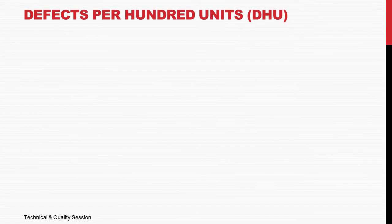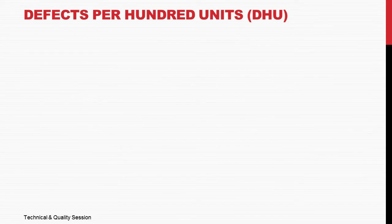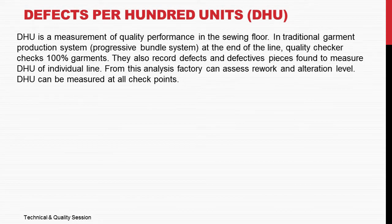DHU — Defects per 100 Units — is a measurement of quality performance on the sewing floor. In the traditional garment production system, the progressive bundle system, at the end of the line, a quality checker checks 100% of garments. They also record defects and defective pieces, to measure the DHU of individual lines.